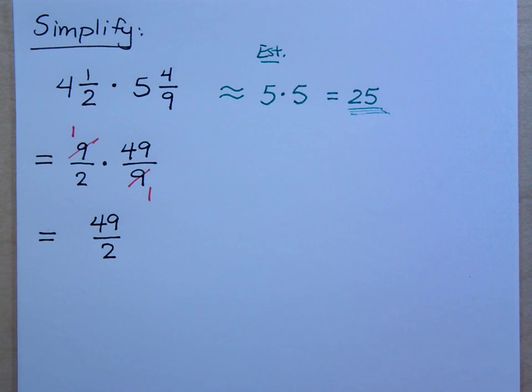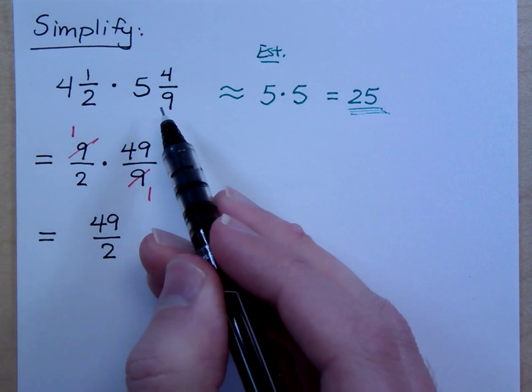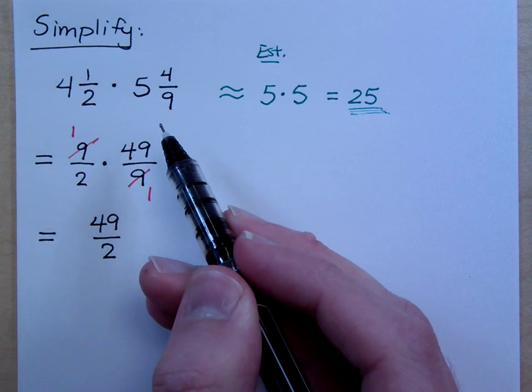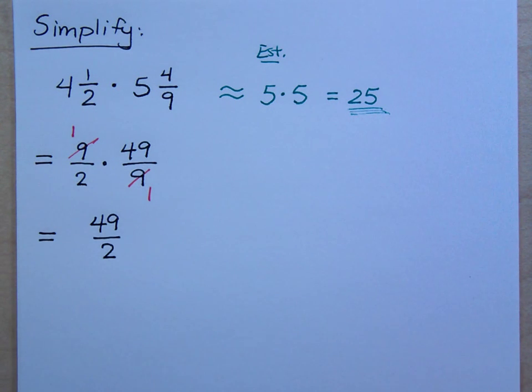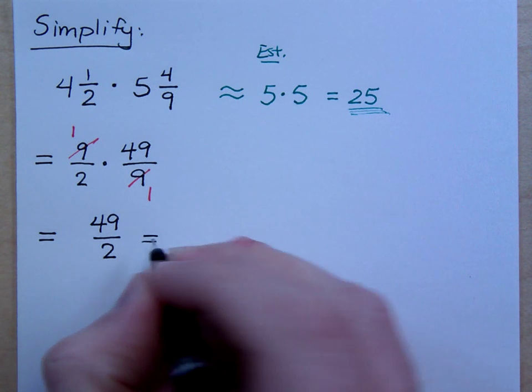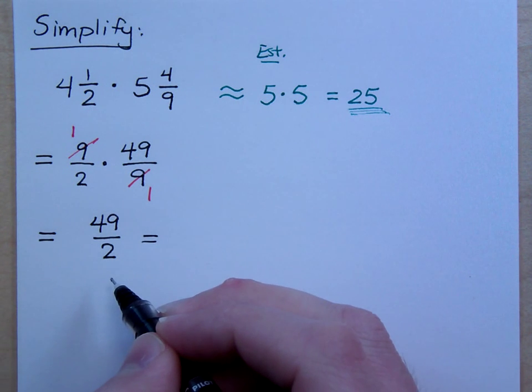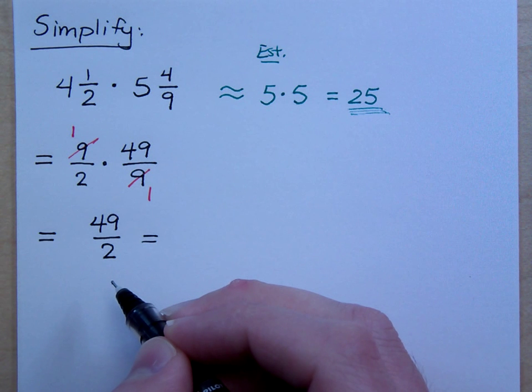If the problem starts off with mixed numbers, typically they want the answer to be what? A mixed number. If it starts off with improper fractions, improper fractions, just leave it as an improper fraction. And read the instructions. Sometimes it will say, leave your answer as a mixed number. Or sometimes it will say, just leave your answer in lowest terms. If it said lowest terms, 49 over 2 would be fine, but we want to make this into a mixed number.